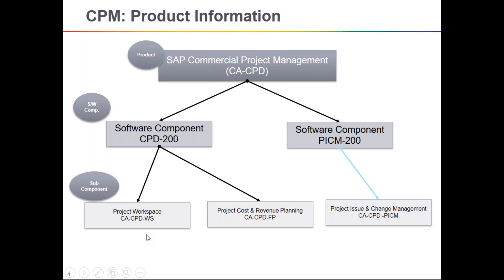The three subcomponents are: first, Project Workspace; another is Project Cost and Revenue Planning; and third, Project Issue and Change Management. Based on their names, we have different functionality in the system. We can use all three in the same client-side implementation, or we can have a combination of two. There are different ways to install it.